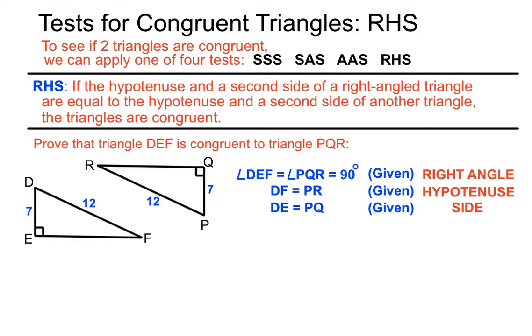And we can now conclude, because we've got a statement for each of those items in the test—an R statement, an H statement, an S statement—that we have enough to conclude that triangle DEF is congruent to triangle PQR because it's passed the RHS test there. So we've proven those triangles are congruent using the RHS test.